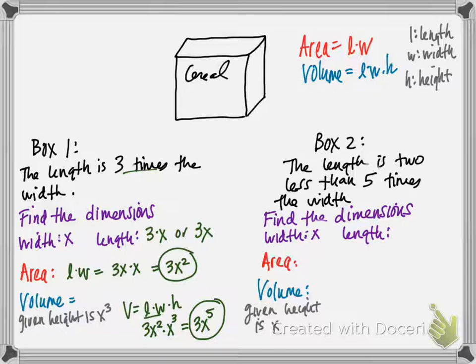So for the next box, it says the length is 2 less than 5 times the width. So first of all, I'm going to start with 5 times the width. So 5 times the width would be 5 times x, or just 5x. So I'm going to write 5x. And then we want 2 less than that. So 2 less than that would be subtracting 2.